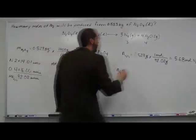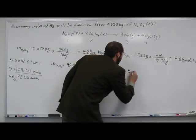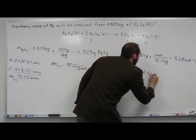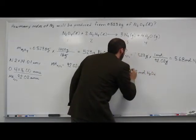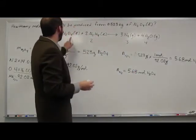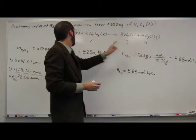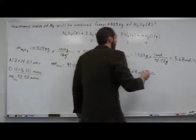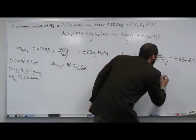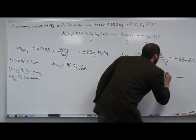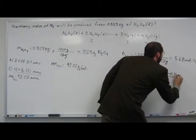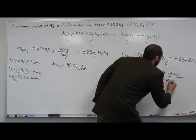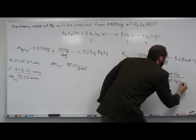So we know that we've got 5.68 moles of N2O4. And we know the ratio of moles is 1 to 3 of dinitrogen tetroxide to nitrogen gas. So all we've got to do is multiply this by 3 moles N2 over 1 mole N2O4.